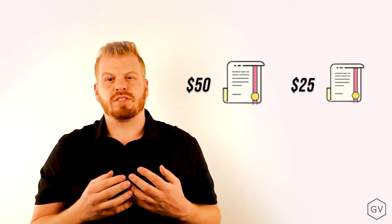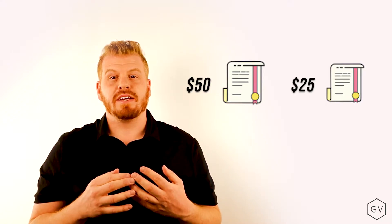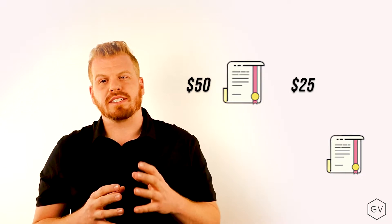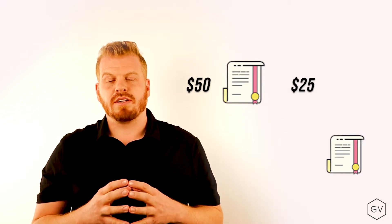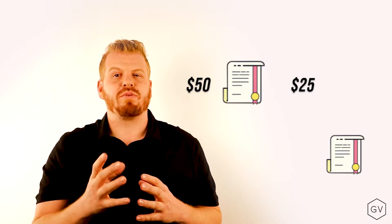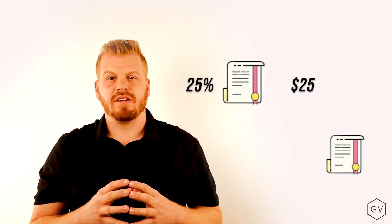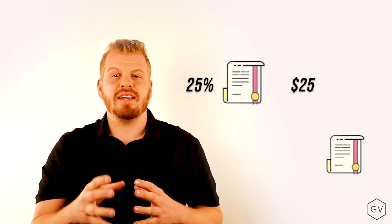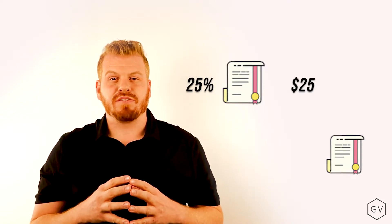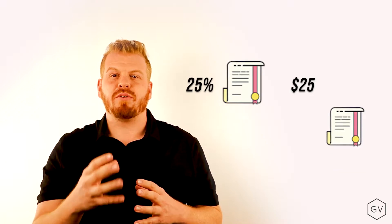In dollar terms, the $25 price tag is cheaper. But in volatility terms, in this example, the 90-day $50 option has a volatility of about 25%, whereas the 10-day $25 option has a volatility of about 31%.